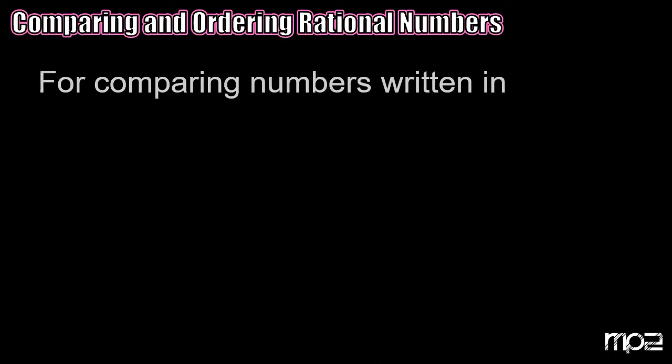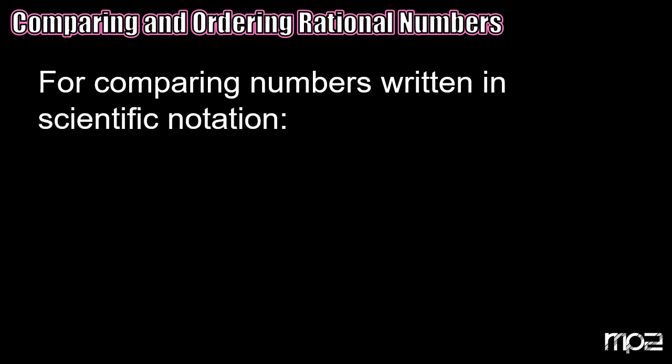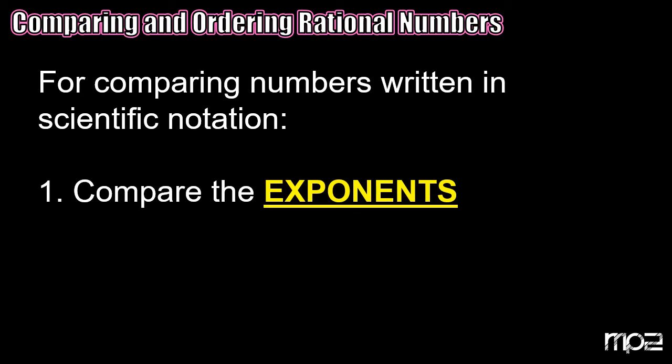In comparing and ordering numbers written in scientific notation, here are some helpful hints. The first step is that we're going to compare the exponents first. If we notice that one exponent is bigger than the other, we're going to know that the number with the bigger exponent is the bigger number.